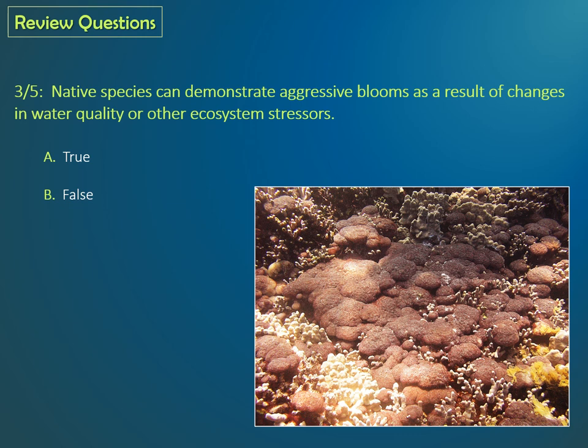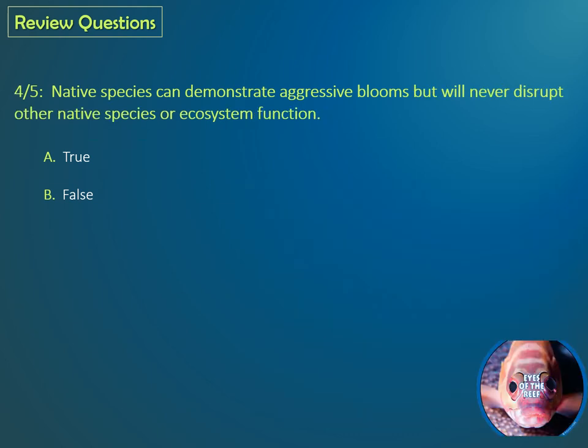Question three: Native species can demonstrate aggressive blooms as a result of changes in water quality or other ecosystem stressors. True or false? The correct answer is A, true. Question four: Native species can demonstrate aggressive blooms but will never disrupt other native species or ecosystem function. True or false? The correct answer is B, false.